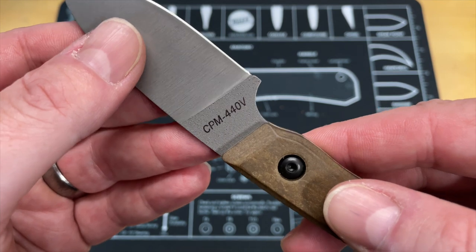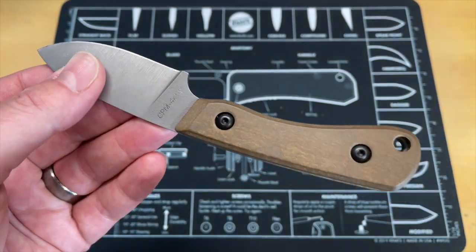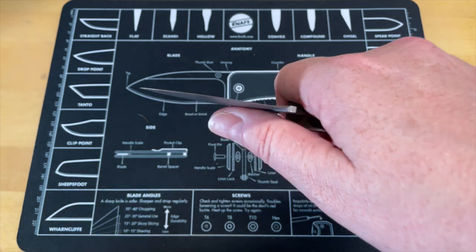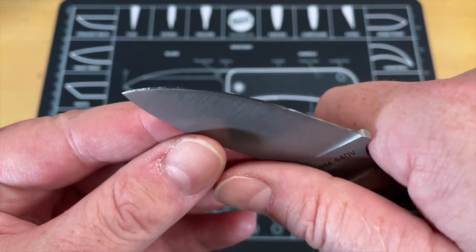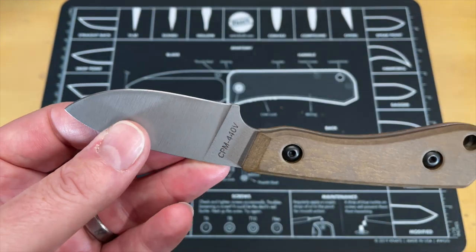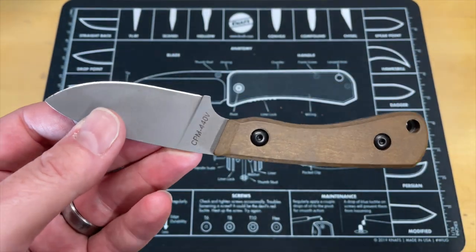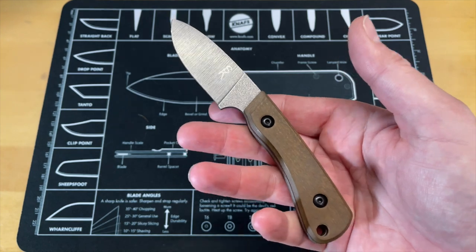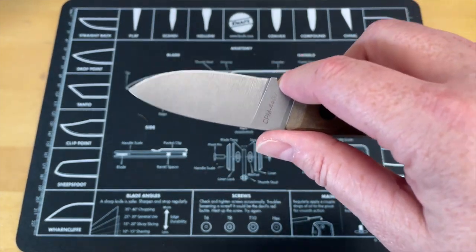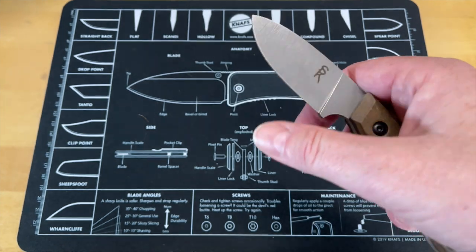The blade shape on it is just about perfect for a lot of outdoors stuff. Grind on it is nice and thin. Now this is marked as CPM 440V, it's actually S60V. This blade - I've had this knife here at my house for a while and you can see I finally got some dull on it. I'm going to have to clean that up before I send it back to Murky Ocean.